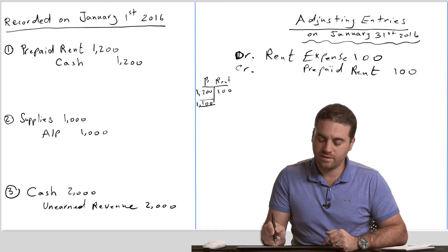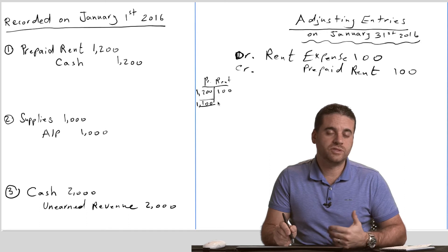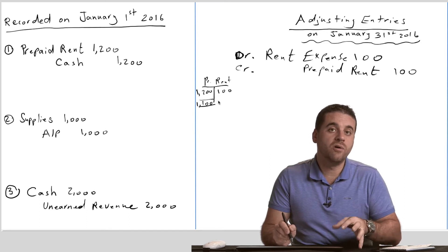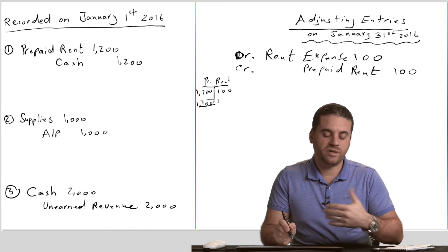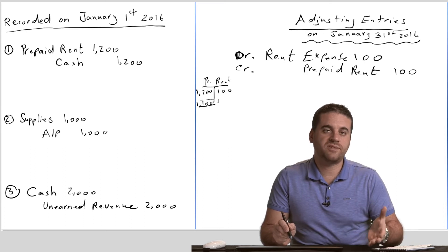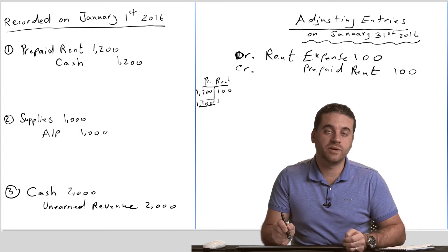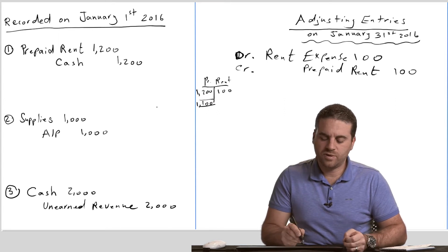That ending balance will keep decreasing by $100 over time after every time we record that same journal entry at the end of every month. That's exactly what we should do because what we own from prepaid rent is decreasing over time just because time passes — that amount of money will be consumed. So that's just one example.